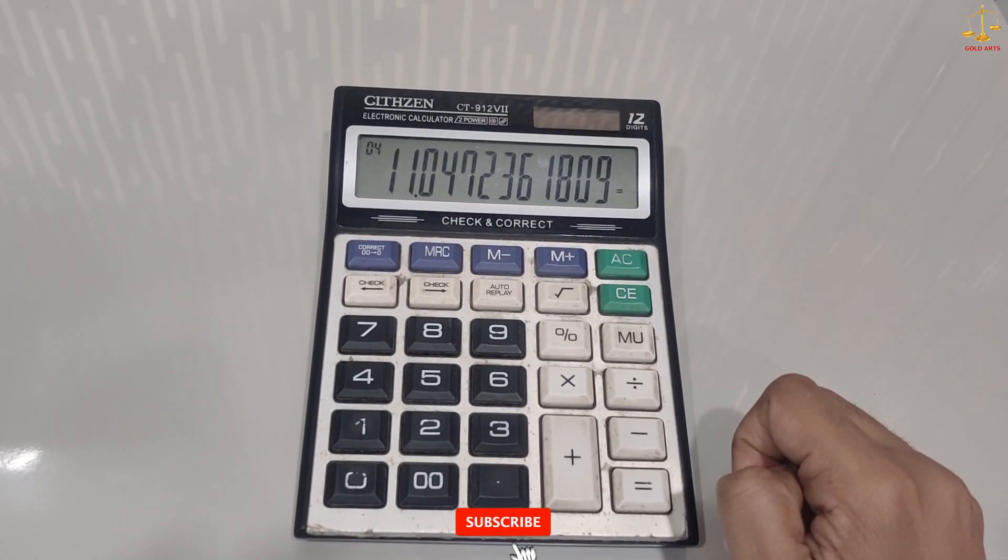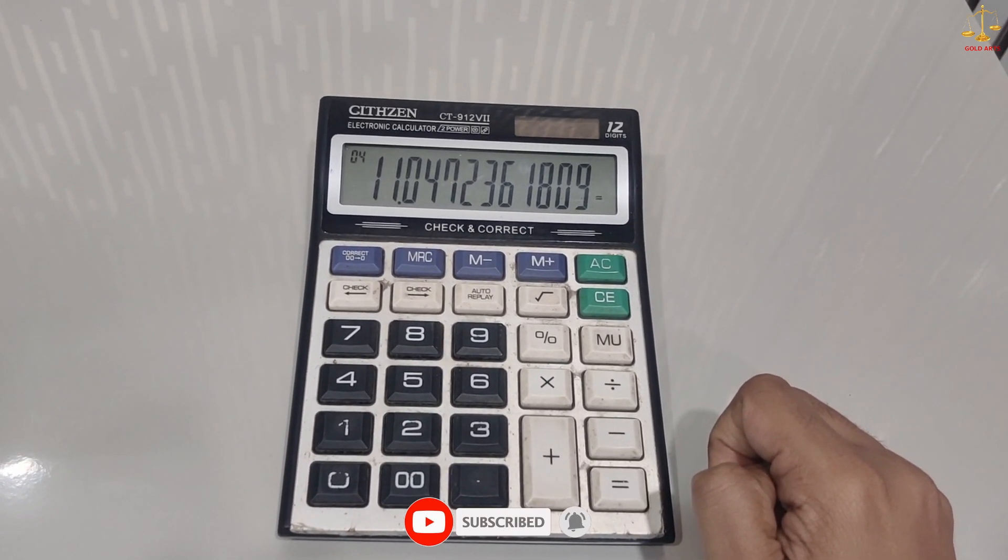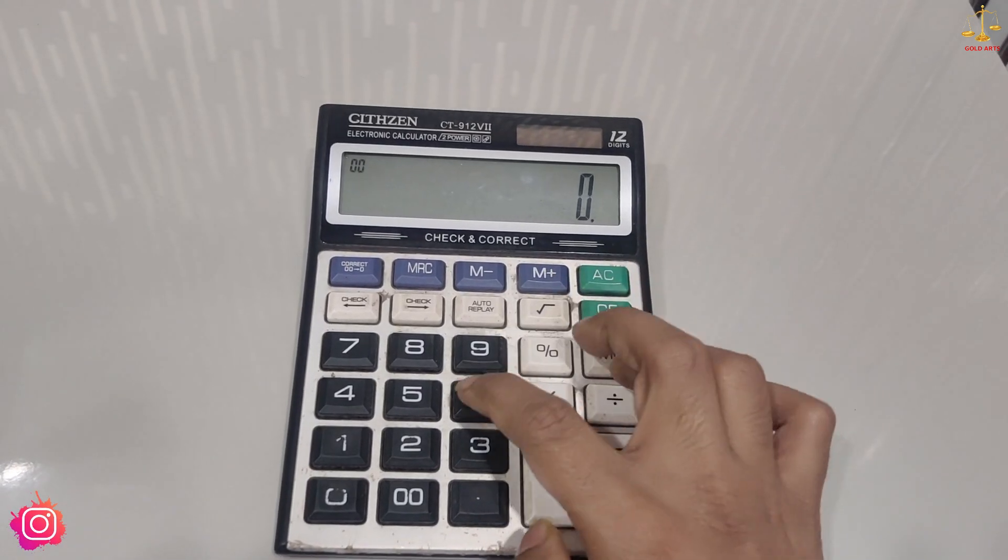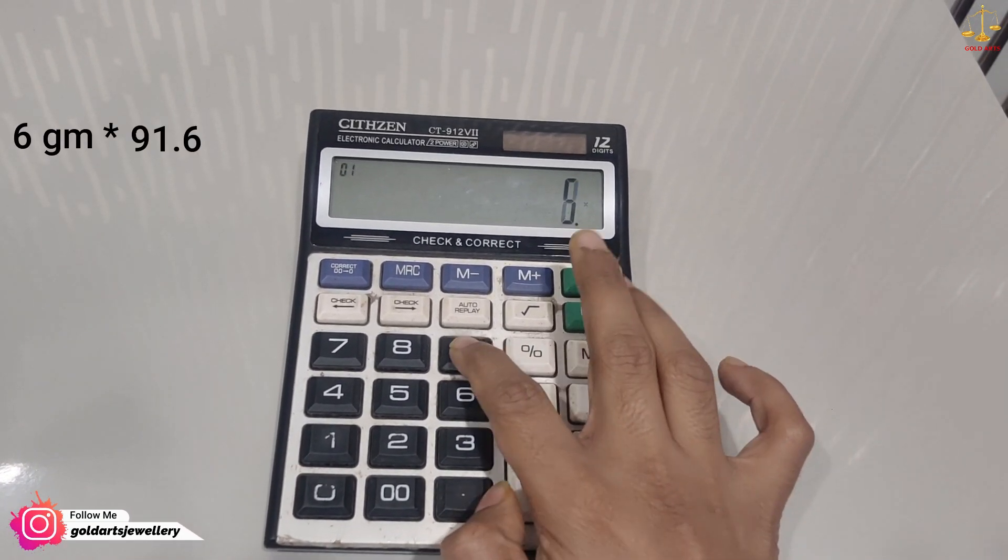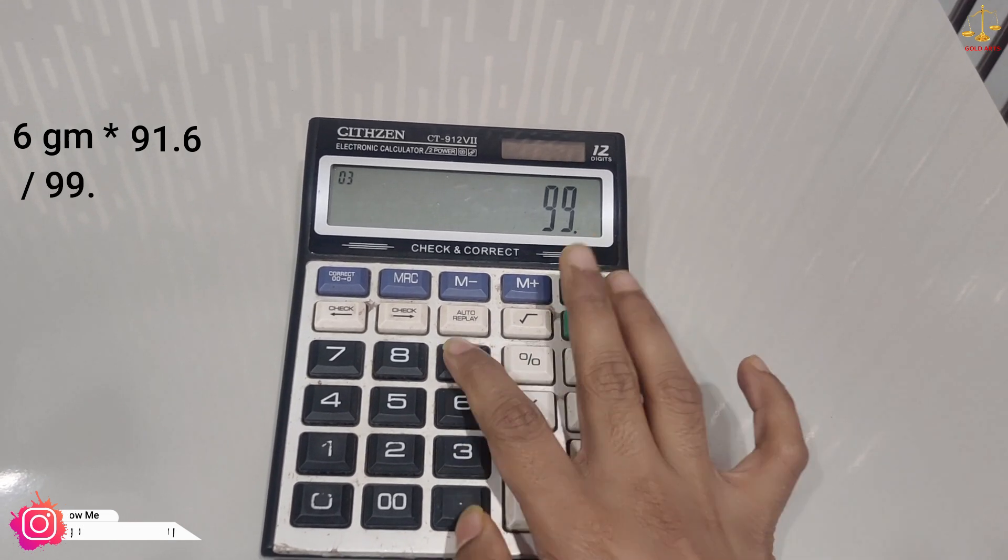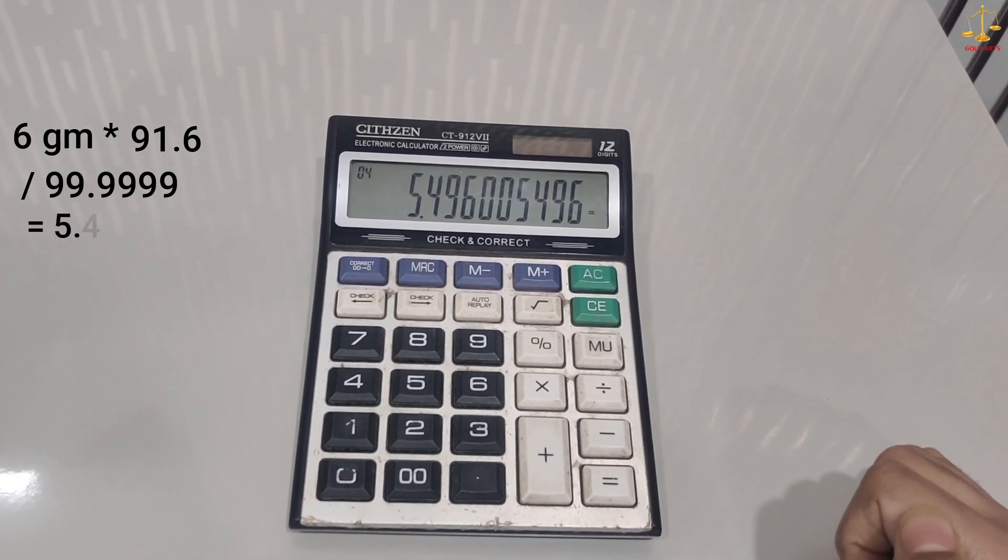Let's assume we are buying 6 grams of 22 karat jewelry and we have 99.9999% purity of gold coins. In that case, the calculation will be: 6 grams multiplied by 91.6, divided by 99.9999, which equals 5.49 grams.